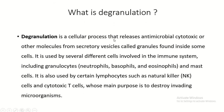What is degranulation? Degranulation is the cellular process that releases antimicrobial, cytotoxic, or other molecules from secretory vesicles called granules from inside certain cells. It is used by several different cells involved in the immune system, including granulocytes — neutrophil, basophil, eosinophil, and mast cells. It is also used by certain lymphocytes such as natural killer cells and cytotoxic T cells, whose main purpose is to destroy invading microorganisms.